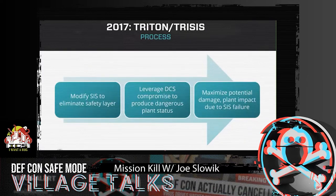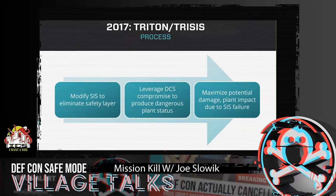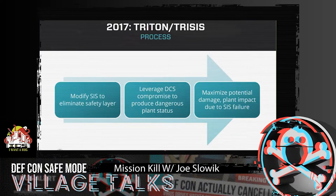What's interesting is that Triton/Trisis, kind of like the 2016 event, didn't work as the attackers intended. It looks like the intended attack was to modify the SIS to eliminate the safety layer, then leverage compromise of the DCS to produce a dangerous state that would propagate beyond the safety layer to cause physical process disruption. Instead, at the time of installation of the Trisis malware — which happened at least twice within the environment — an error within how the malware was put together caused the safety system to trip, the plant shut down. This is still very disruptive and costly, but doesn't result in the damage that would have happened had this attack actually worked as designed. Attackers are getting smarter but still have a ways to go before doing so successfully on a consistent basis.